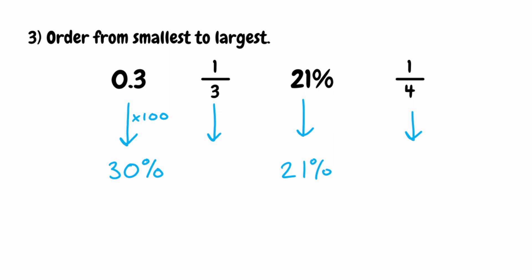We've now got a third. This may be one you know off by heart — it's 33.3 recurring percent. But if not, you can do the division: 1 divided by 3. Three doesn't fit into 1, so we carry over. Threes into 10 fit three times — three times three is nine, leaving a remainder of 1. This repeats, so we get 0.3 recurring as a decimal. Multiplying by 100 gives us 33.3 recurring percent.